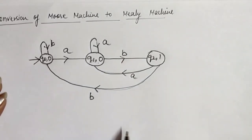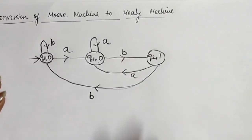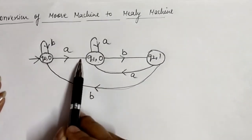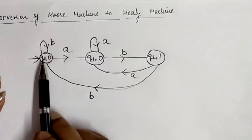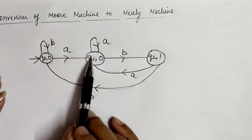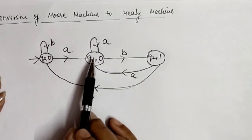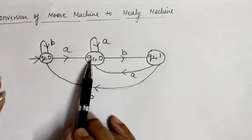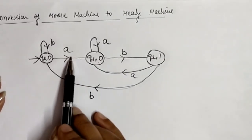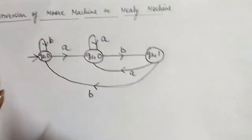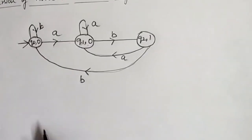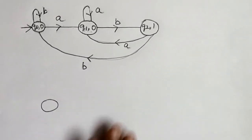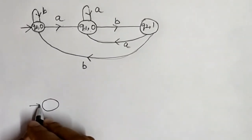The main step is: whenever there is a transition going to a state, whatever output is associated with that destination state, take it and print it with the transition. Let's see what this means with our example.